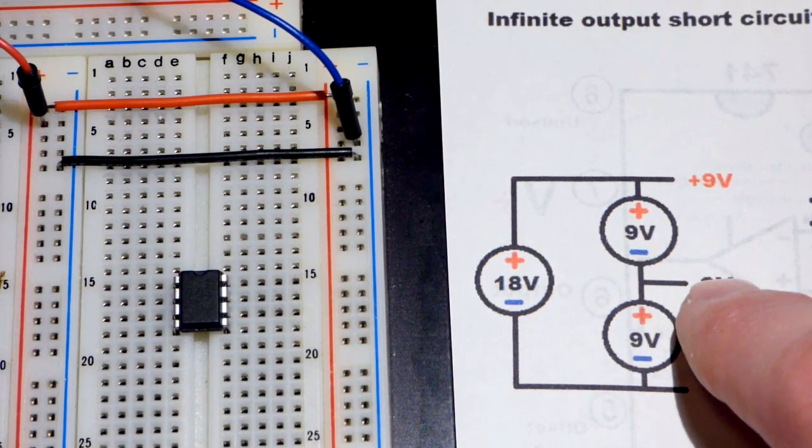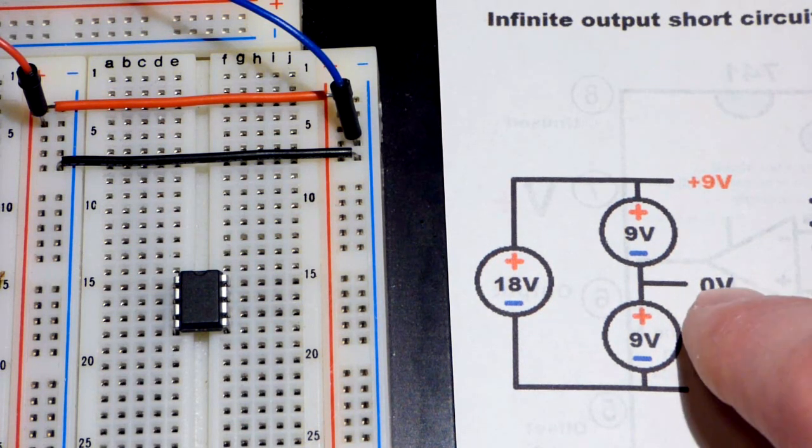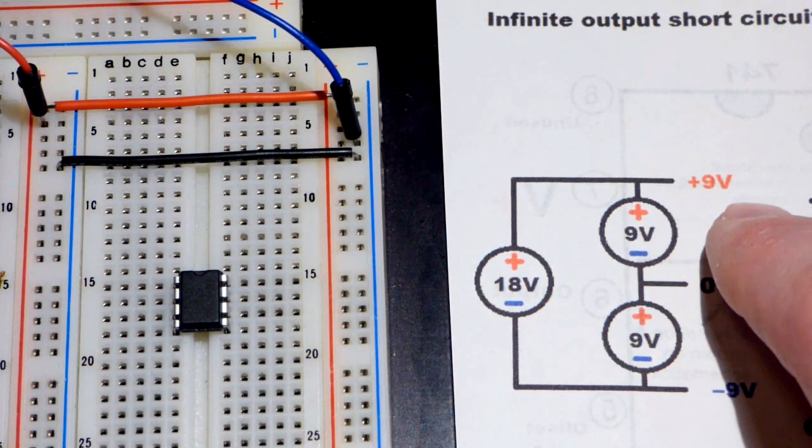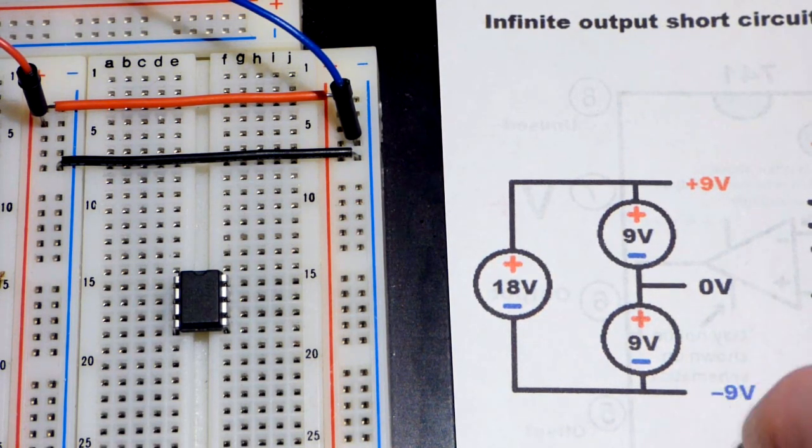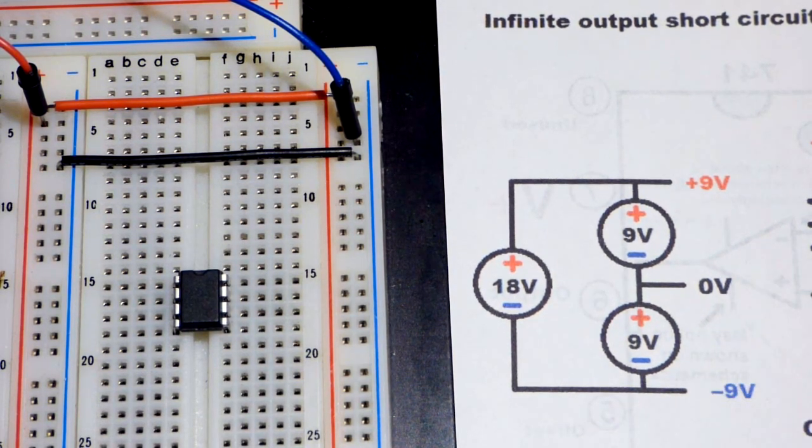So all circuits will end their journey at the zero volt reference point. They'll either begin at more positive, so conventional current if you want to think of it that way, or from the negative, electron flow, if you want to think of it that way.